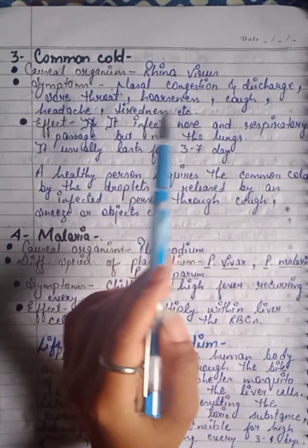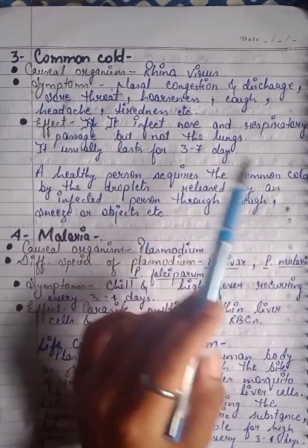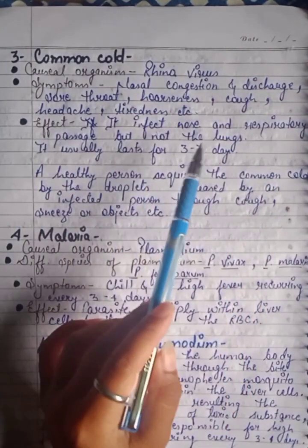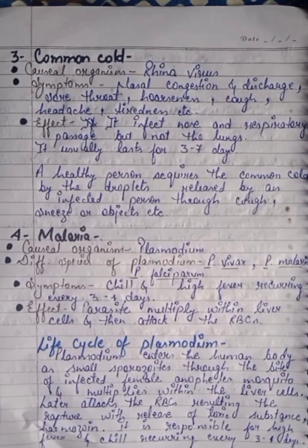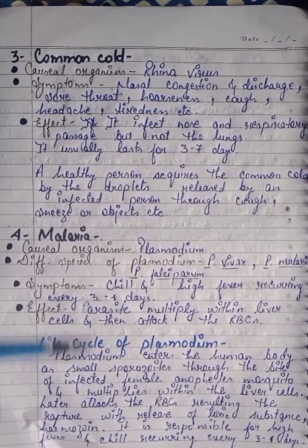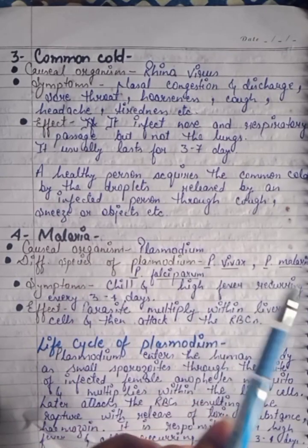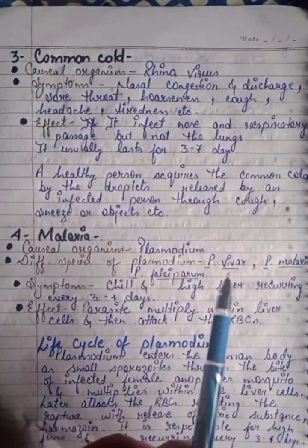Third is Common Cold. The causal organism is Rhinovirus. Symptoms include nasal congestion and discharge, sore throat, hoarseness, cough, headache, and tiredness. It infects the nose and respiratory passage but not the lungs. It usually lasts for 3 to 7 days.